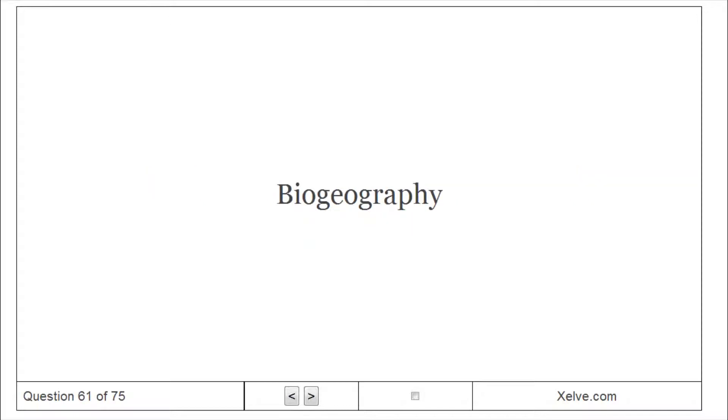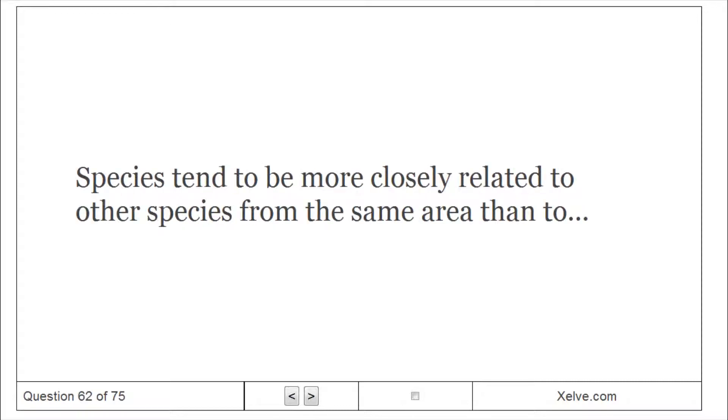Biogeography: The geographical distribution of species. Species tend to be more closely related to other species from the same area than to other species with the same way of life that live in different areas.